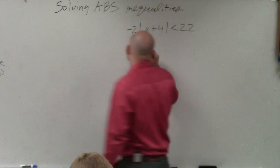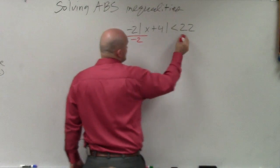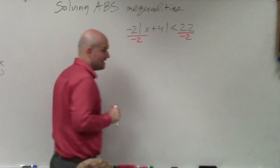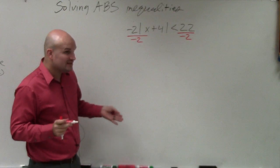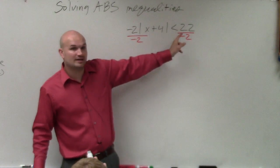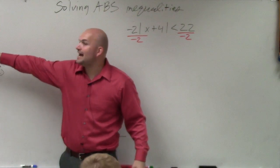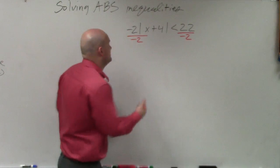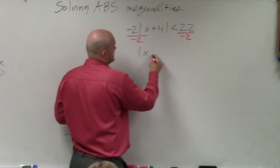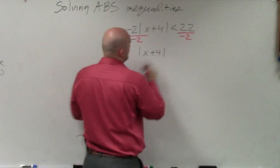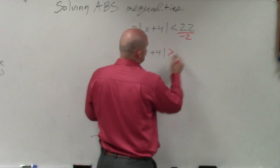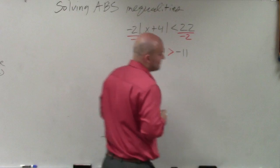So the first thing I'm going to do is I'm going to divide by negative 2 on both sides. When doing that, though, whenever we have an inequality and I'm multiplying or dividing by a negative number, I have to make sure I flip the sign. So therefore, I now have absolute value of x plus 4 is now greater than negative 11.